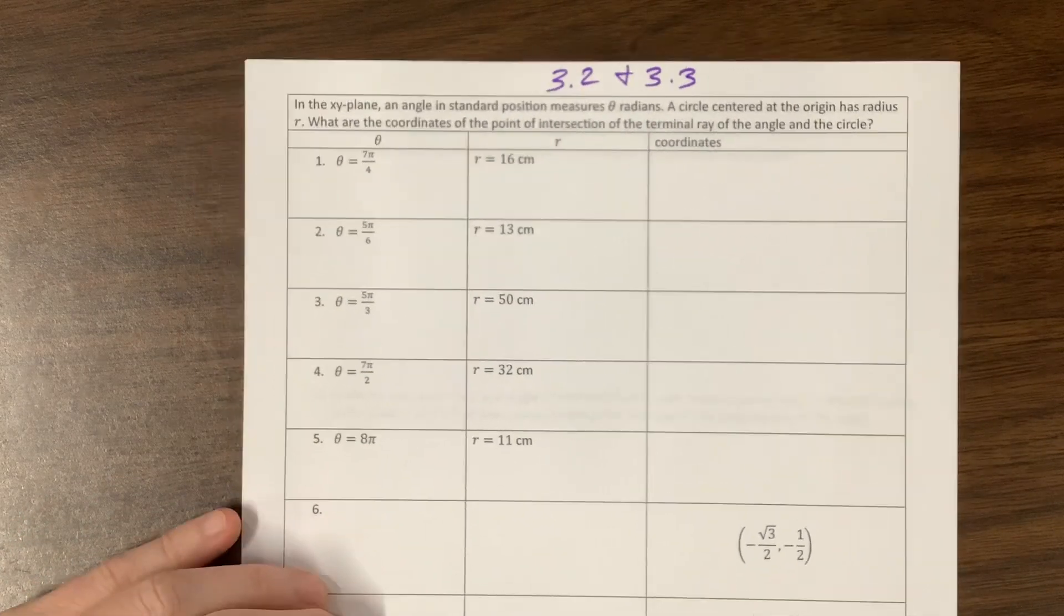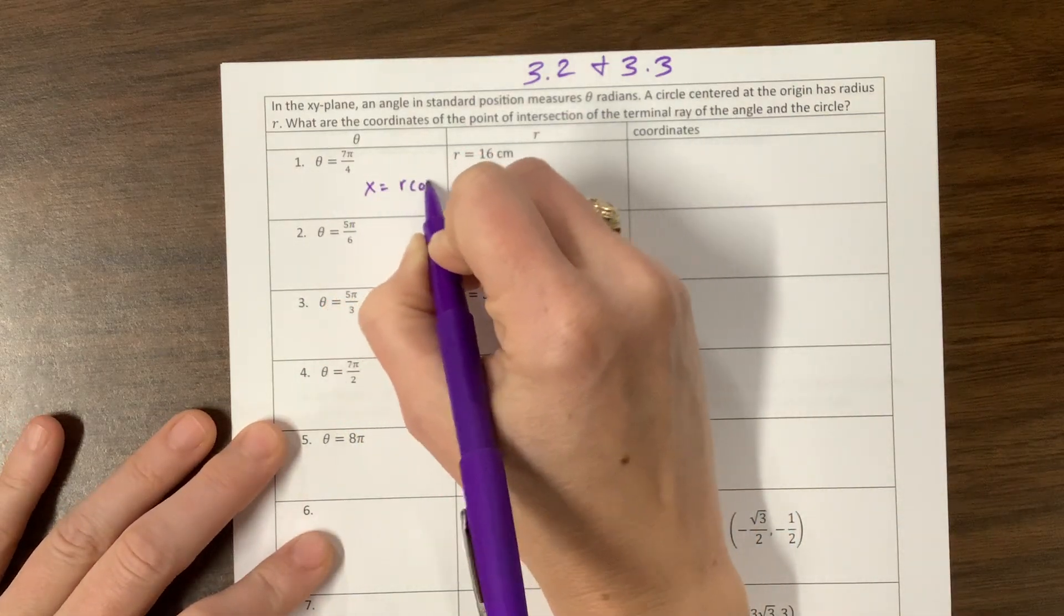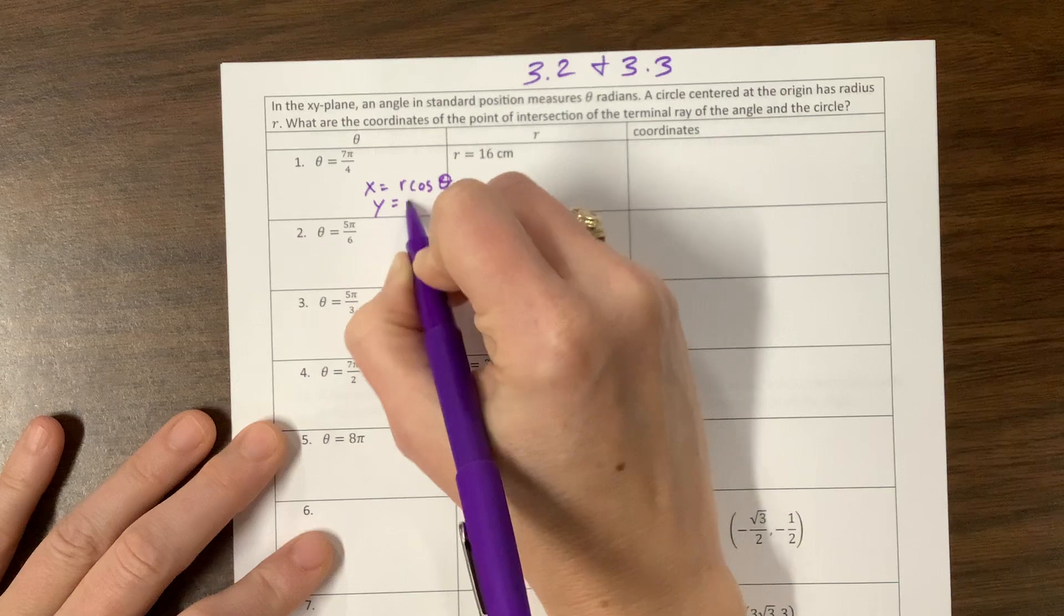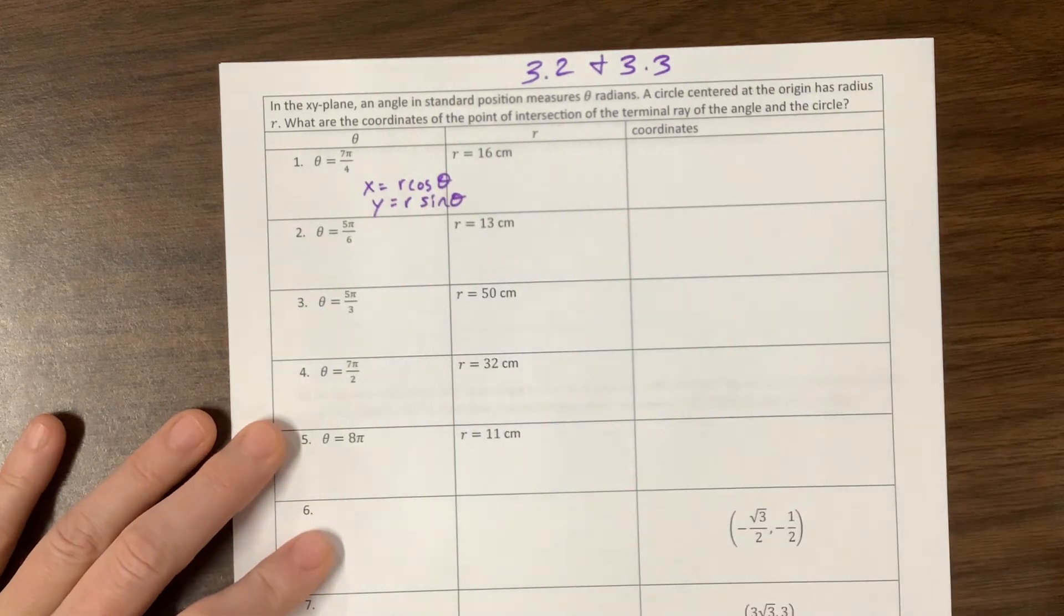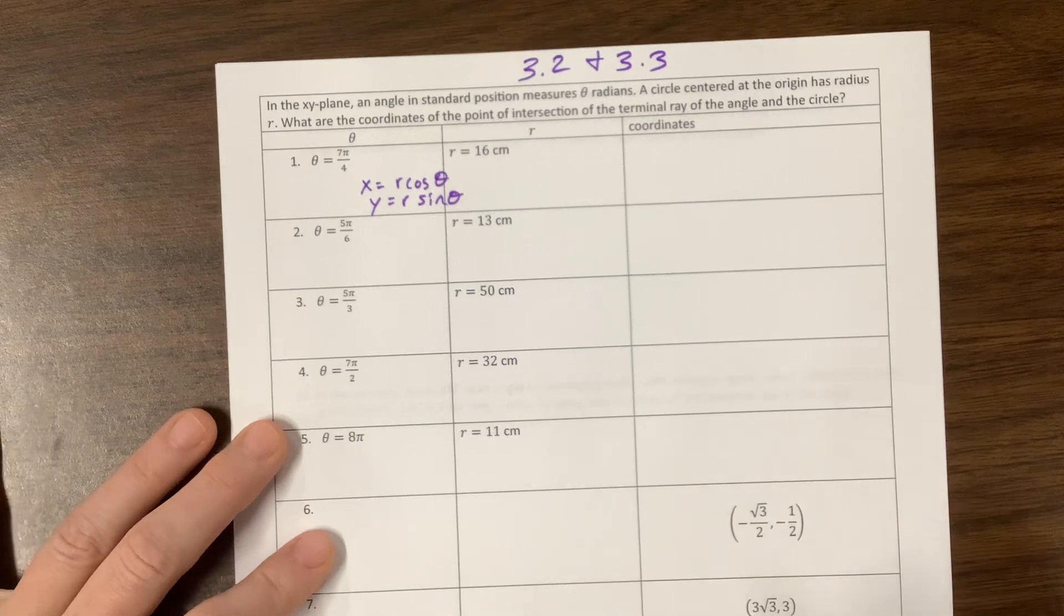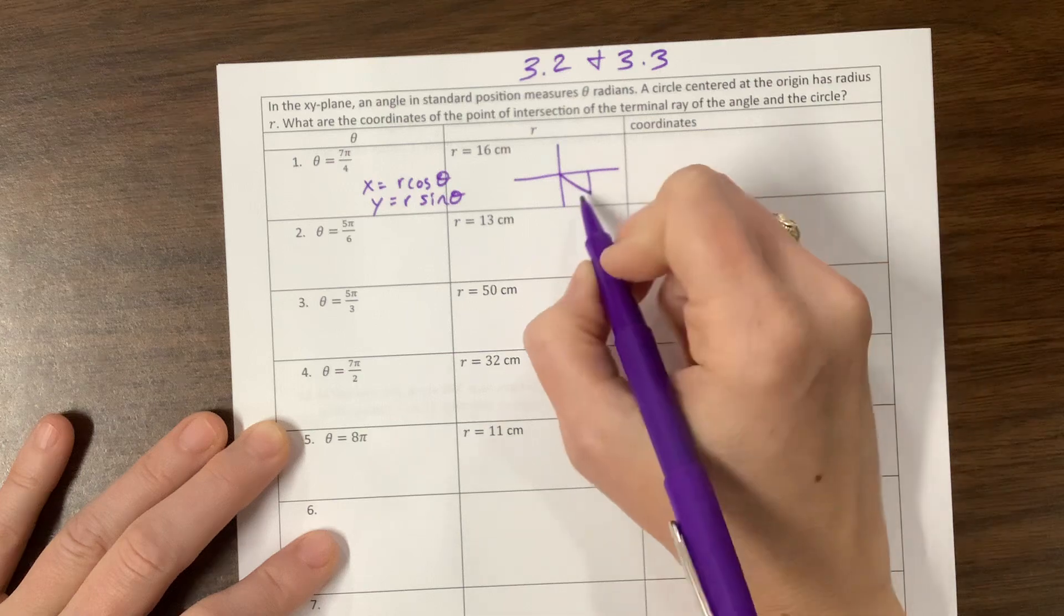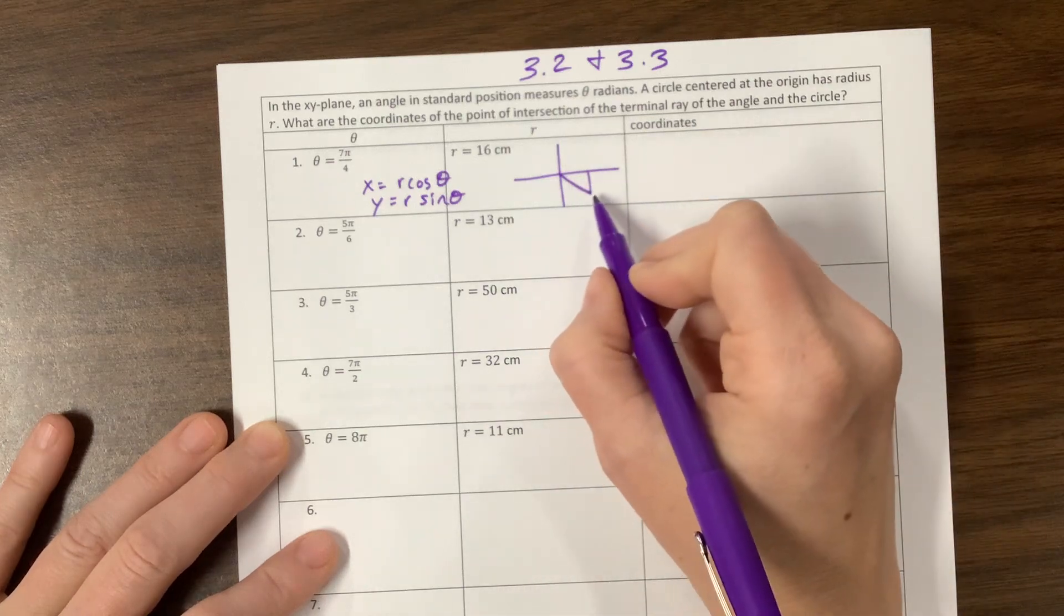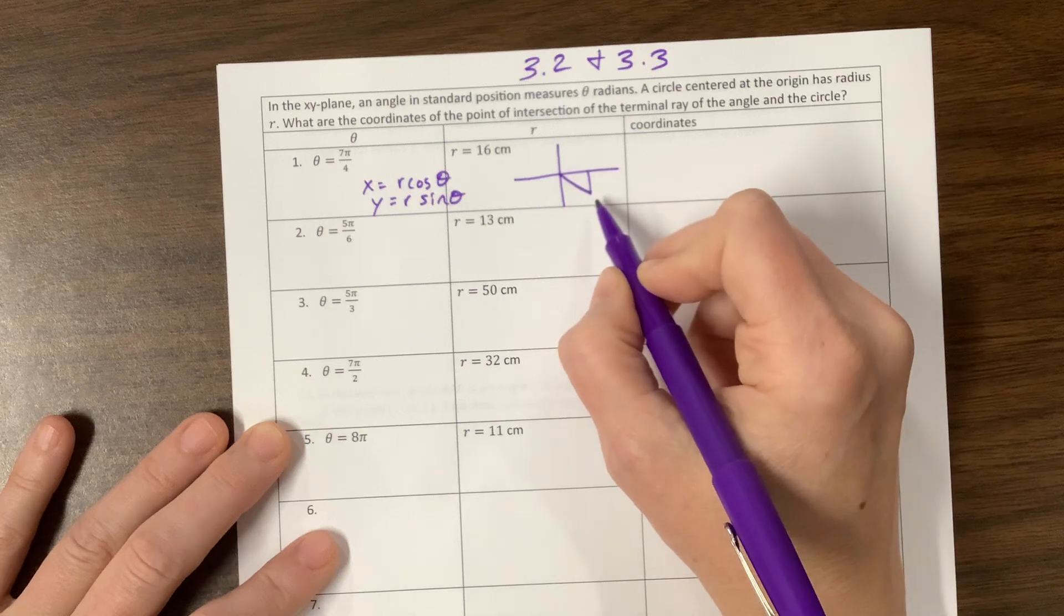We talked in the last video about how the coordinates x equals r cosine theta and y equals r sine theta. On this one, we need to be experts at the unit circle. Here's my work. When I'm at 7π/6, I'm down here, so what are my coordinates? It's positive √2/2 and negative √2/2.